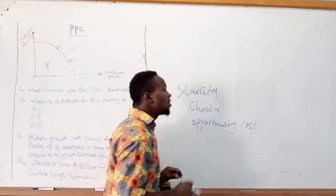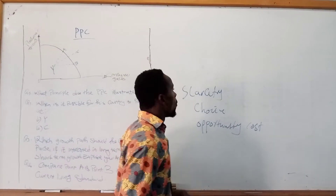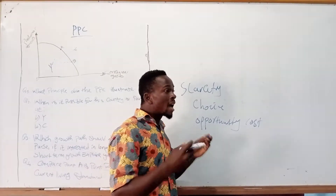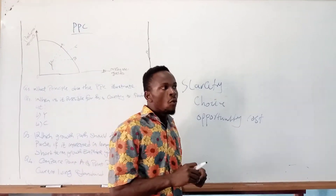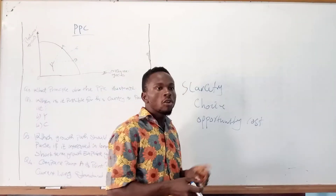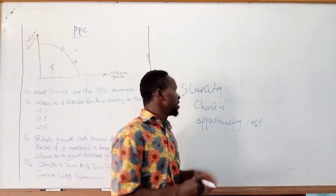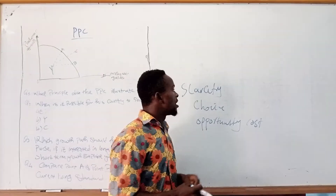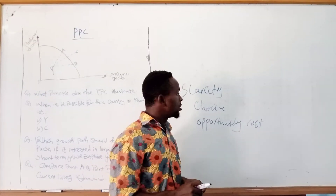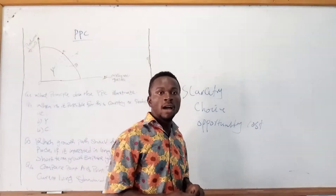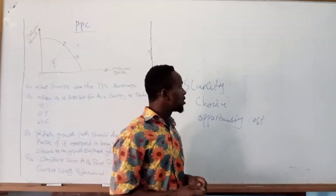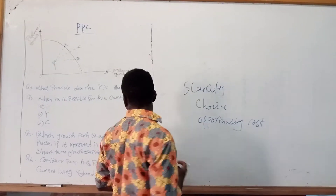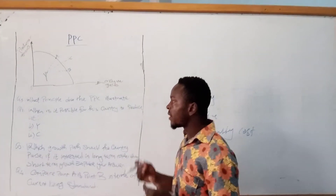Should any question be placed before you asking what principle does the PPC illustrate, those are your three answers. They can also manipulate the wording — for example, they may ask what principle does the Production Possibility Boundary illustrate. It illustrates the same thing. The Production Possibility Curve has many names: the Production Possibility Curve, the Production Possibility Boundary, and the Opportunity Cost Curve.